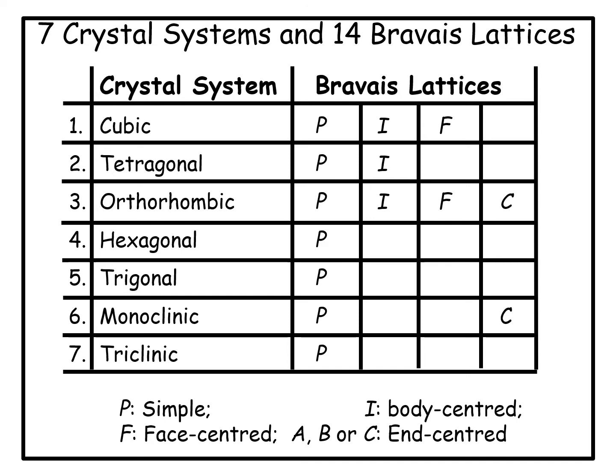Similarly, in the tetragonal system, there are two Bravais lattices: tetragonal P and tetragonal I, that is simple tetragonal and body-centered tetragonal. Other crystal systems also have one or more Bravais lattices.